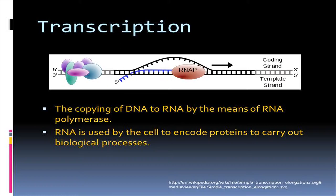Before I go into everything that we're looking at, I want to make sure everybody knows about transcription, which is the copying of DNA into RNA by RNA polymerase. As you can see in this diagram, the RNA polymerase is on the template DNA strand, and as it runs across, it encodes for the RNA coming off. RNA is needed in all living things to code for proteins for biological functions.